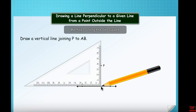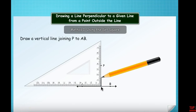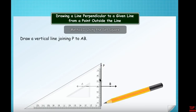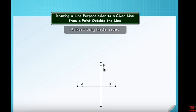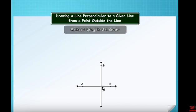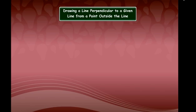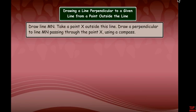Draw a straight line through P using the set square, both upwards and downwards. This line through P is perpendicular to AB. Name the point of intersection as Q. So QP is perpendicular to AB. We have now drawn the perpendicular using the set square.